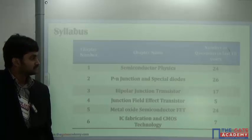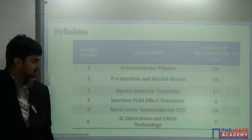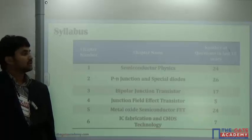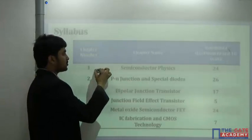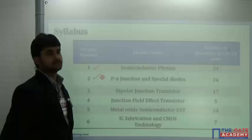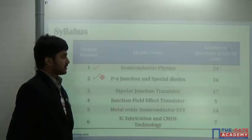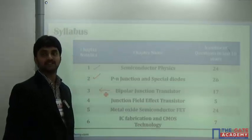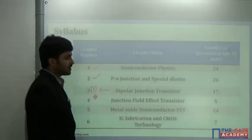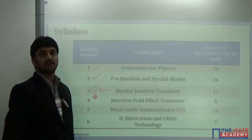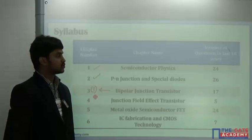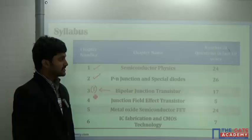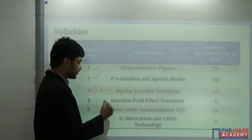We'll cover special diodes, Bipolar Junction Transistors, Junction Field Effect Transistors, Metal Oxide Semiconductors, and IC fabrication. We will emphasize more on the first and second chapters, as they carry more than 50% of the weightage. For BJT, since you have already covered it in Analog Electronics and solved many problems, we will limit that to about one hour. JFET is also a lower-weightage chapter.